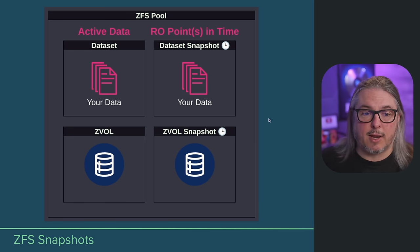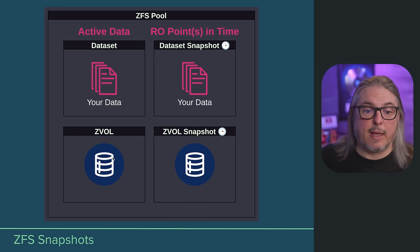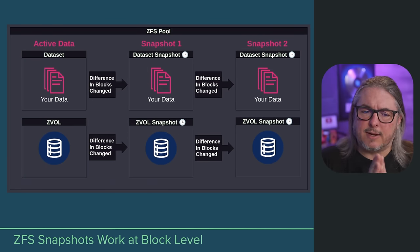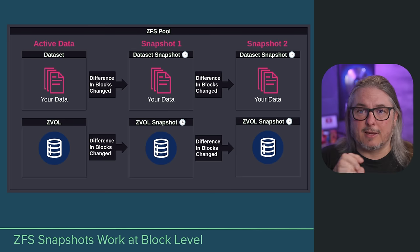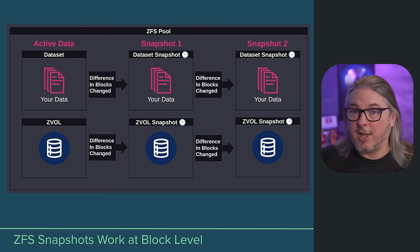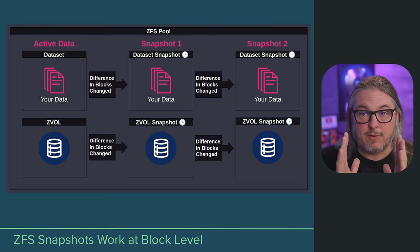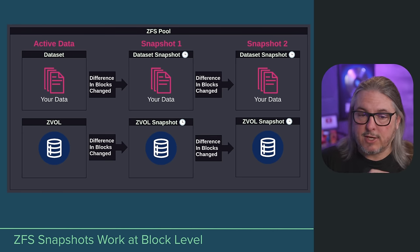If we take a snapshot and we delete the dataset that the snapshot was based off of, all subsequent snapshots attached to that dataset go away, and the same thing applies to ZVOLs. The most common question that gets asked is: how much space does a snapshot take? It takes the difference in blocks changed from one snapshot to the other. This is a very important concept — it's not differences in files changed or differences in renamed files or where you shuffled a directory structure around. It is very specifically, both for ZVOLs and datasets, based on the block-level changes.